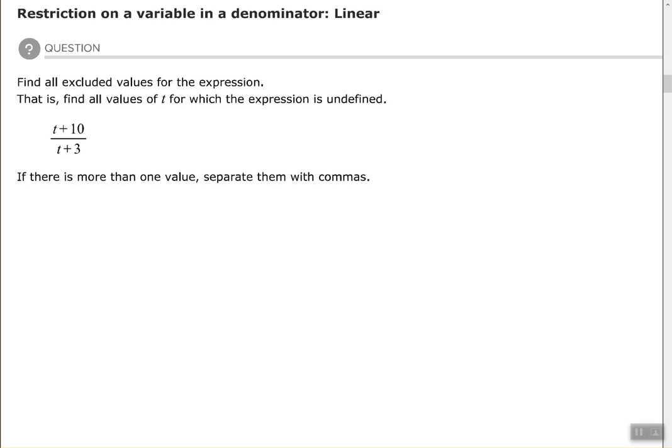All you have to do here to find the undefined values is to look at your denominator. Whatever expression is down there, pull it out to the side, set it equal to zero, and solve. And that's how you find your excluded values. All right, so we have t plus 3 equals 0. Subtract 3 from each side.